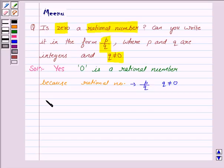That is, zero is equal to zero upon one, or it can be written as zero upon two, or it can be written as zero upon three and so on.